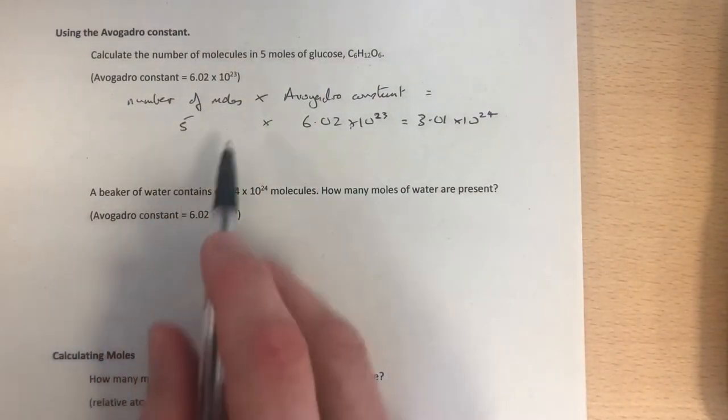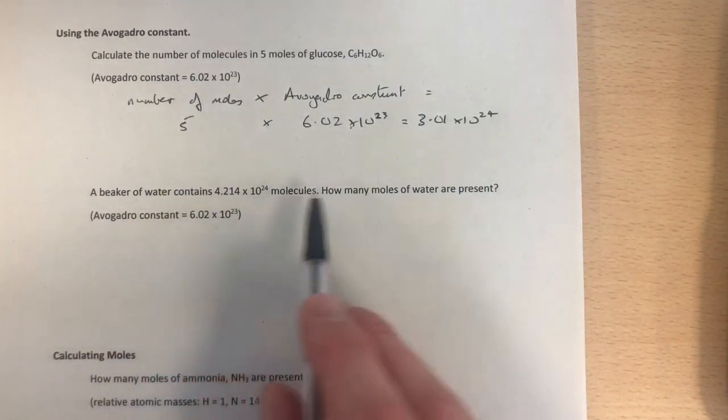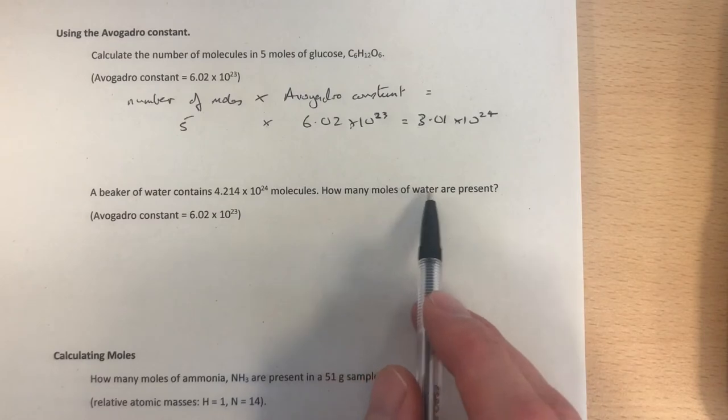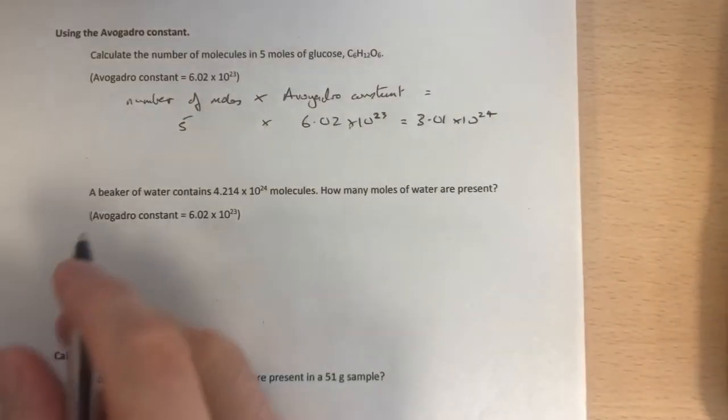Next question. Using exactly the same equation, we're just going to rearrange it this time. It says a beaker contains this many molecules. How many moles of water are present? So let's make that back into the dozen again to try and understand that. If I said I've got 36 eggs, how many dozen eggs do I have? Hopefully you're saying three dozen. And the maths you're doing is 36, the number of eggs, divided by the constant, the dozen, 12. So that's what we're going to do here.